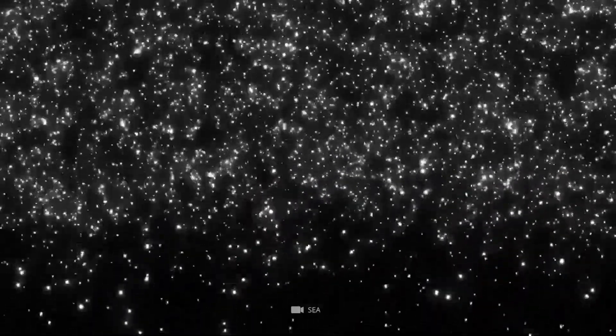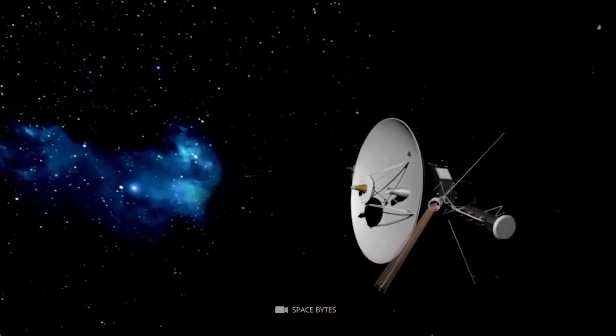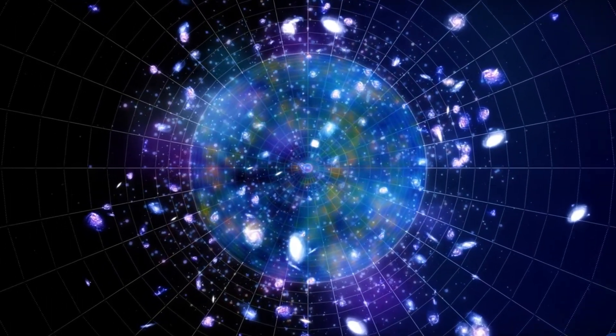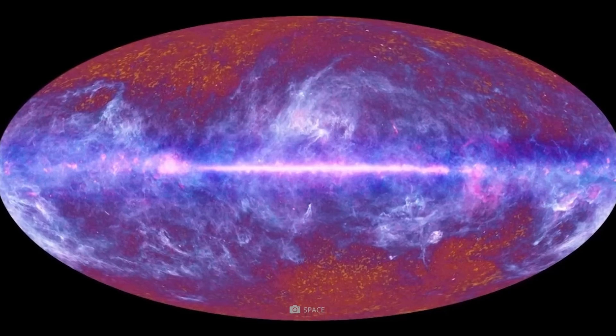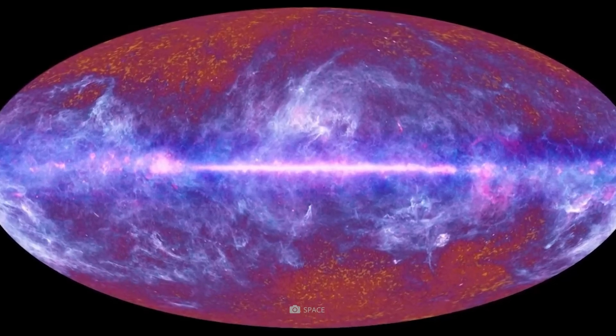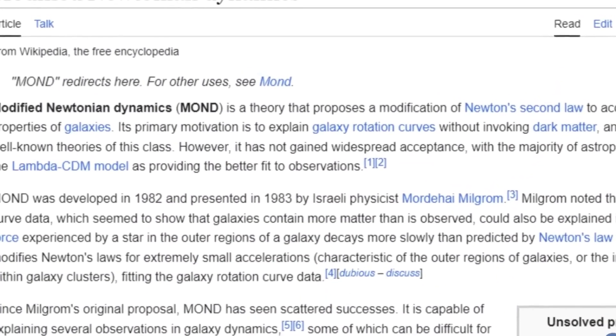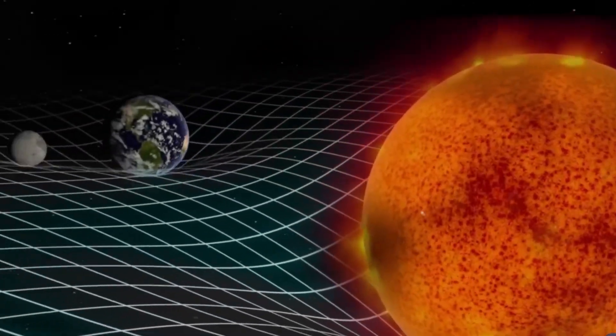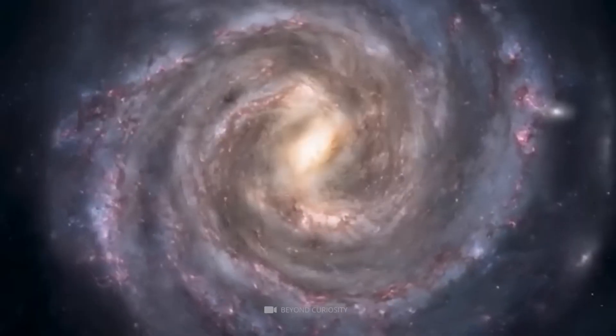Indrano Banach's work highlights a troubling inconsistency known as the Hubble tension, which refers to differences in the measured expansion rate of the universe when observed locally versus predictions based on the CMB. This tension suggests that conventional models like lambda-cold dark matter might be missing critical nuances of cosmic structure. Banach proposes that our giant void could significantly influence local measurements of cosmic expansion, suggesting that these measurements might be inflated by the dynamics within the void itself.